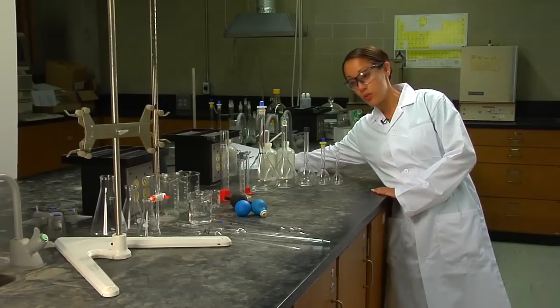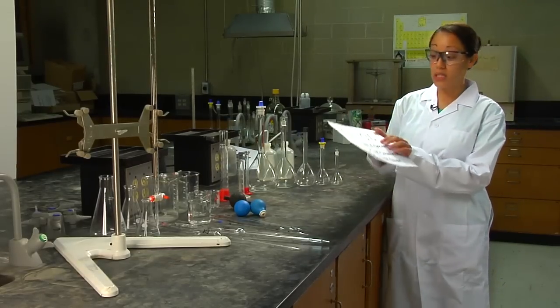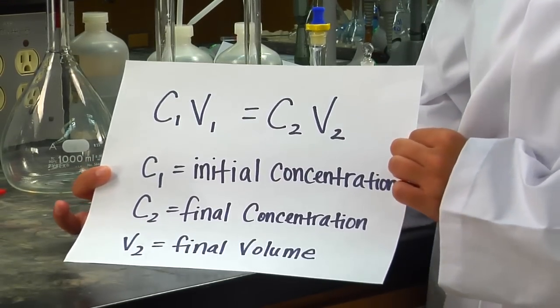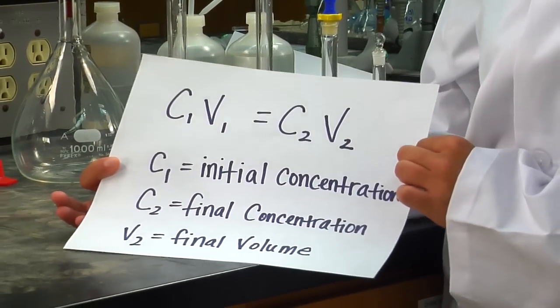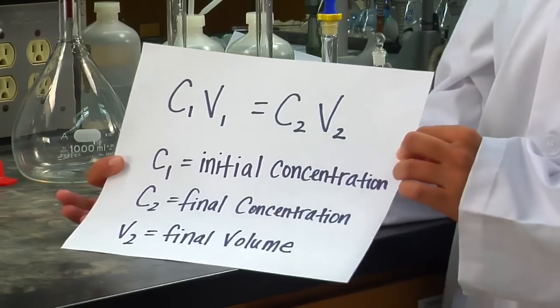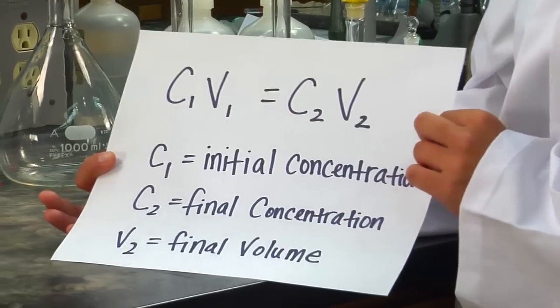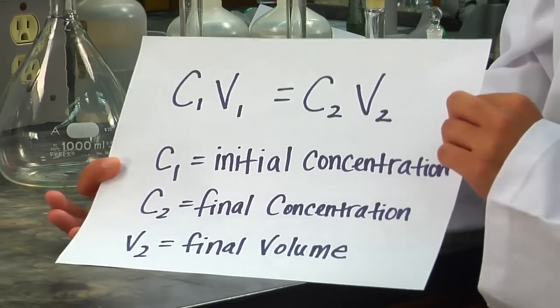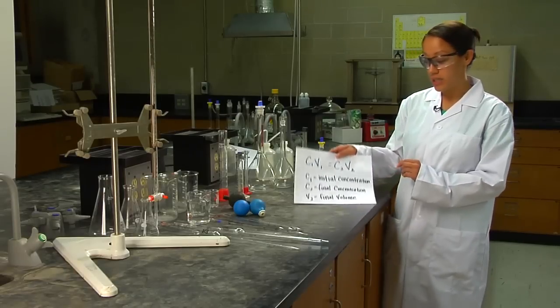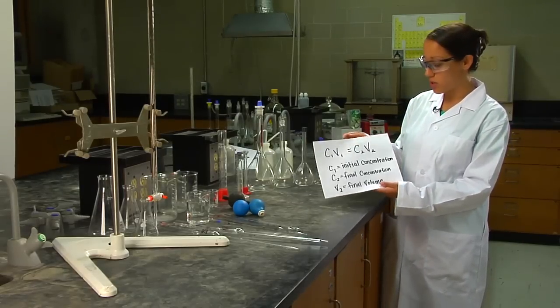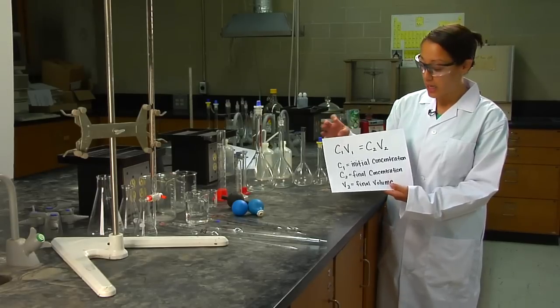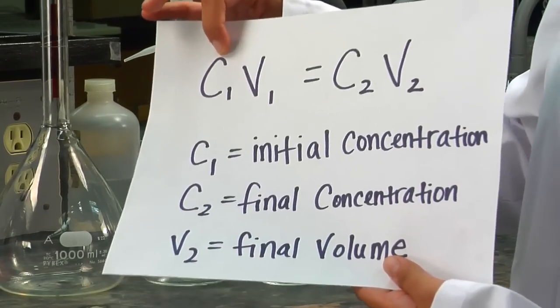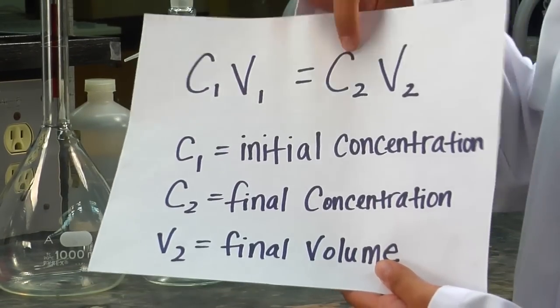Your main equation that you will use throughout the entire lab is C1V1 equals C2V2, where C1 is your initial concentration, C2 is the final concentration that you want to make, and V2 is the final volume of your final concentration you want to make. In this calculation we're mainly trying to figure out V1, how much of the volume of your most concentrated stock solution you need to use to make your final concentration.